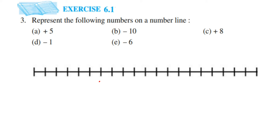When you go towards the right hand side of zero, the numbers are positive. When you go towards the left hand side of zero, it will be negative integers. So on the right hand side we have positives, and on the left hand side we have negatives.